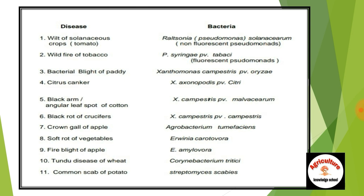No. 7 — crown gall of apple, caused by Agrobacterium tumefaciens. No. 8 — soft rot of vegetables, caused by Erwinia carotovora. No. 9 — fire blight of apple, caused by Erwinia amylovora. Note the difference: soft rot of vegetables is caused by Erwinia carotovora, and fire blight of apple by Erwinia amylovora. No. 10 — tundu disease of wheat, caused by Clavibacter tritici. No. 11 — common scab of potato, caused by Streptomyces scabies.